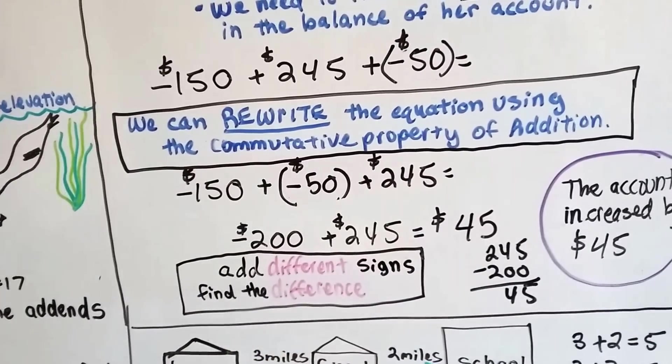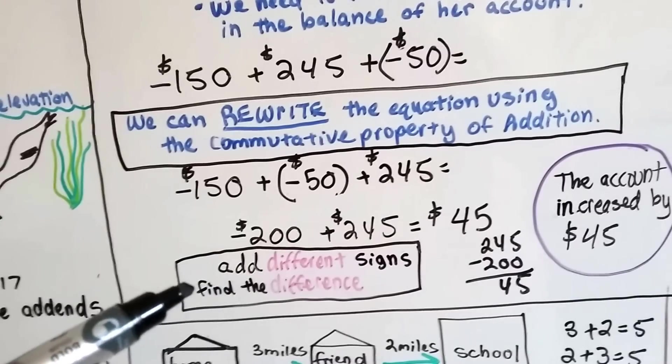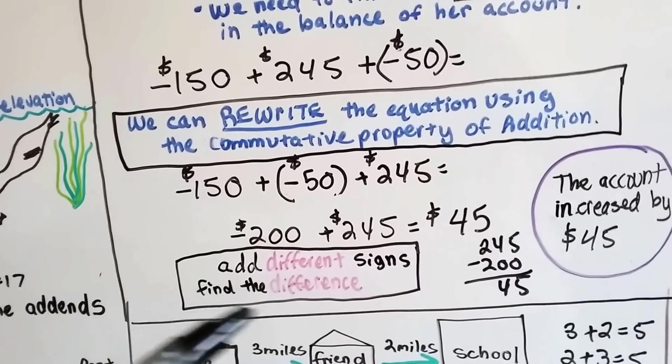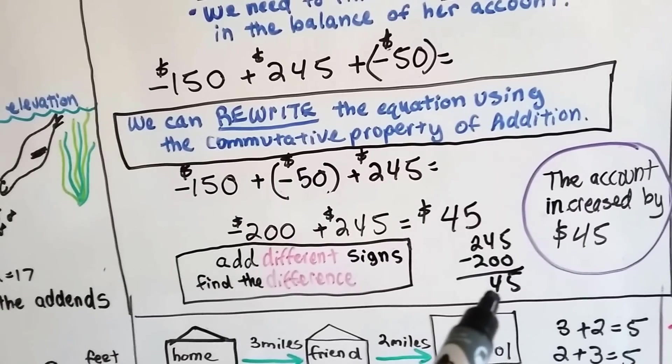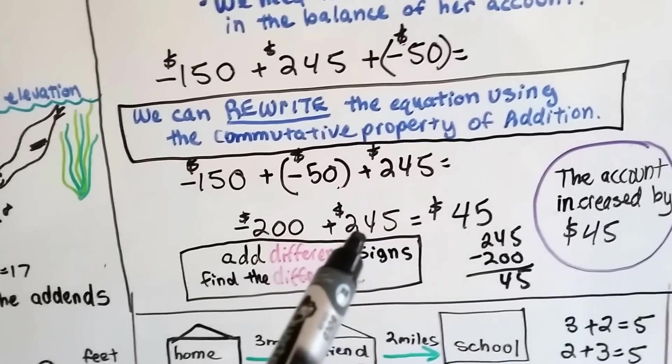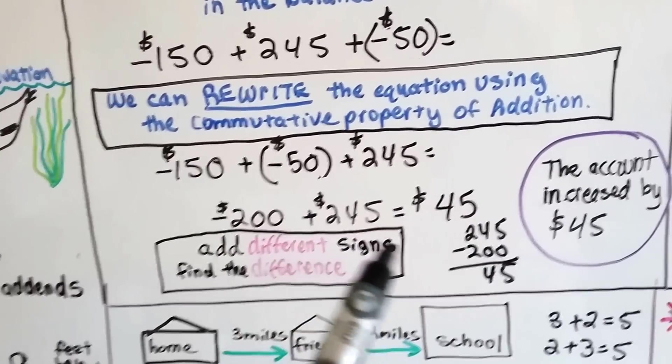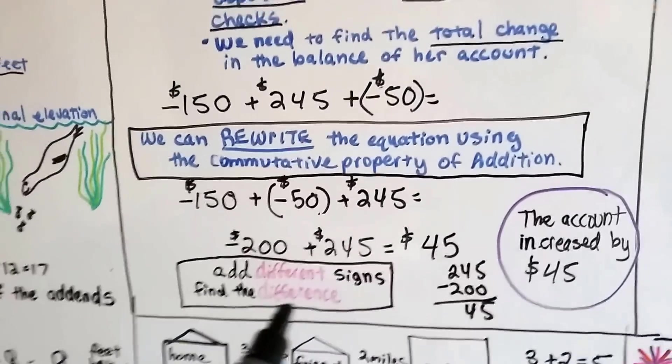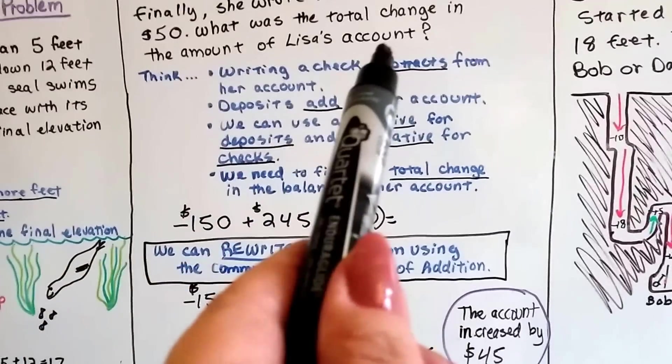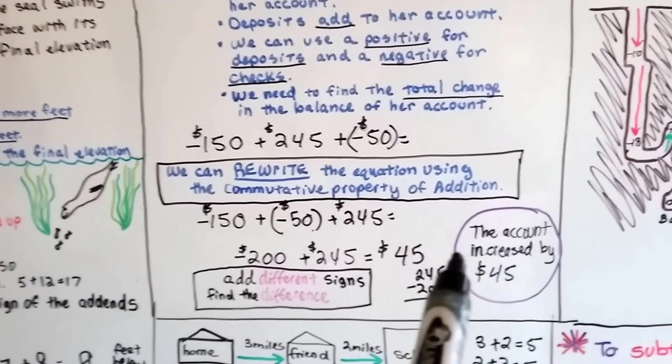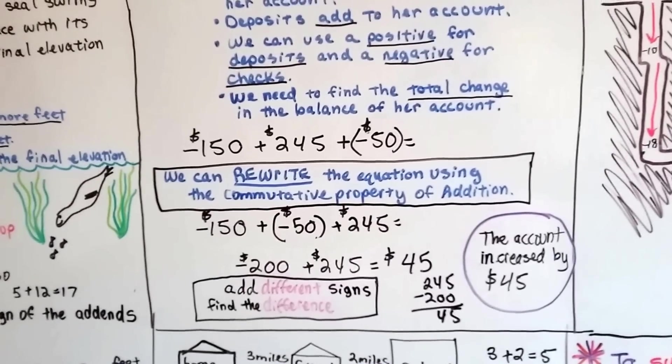Now, we need to add this 245, but it's a positive and that's a negative. When we add different signs, we find the difference. Different difference when adding. The difference between 200 and 245 is 45. 245 take away 200 is 45. We take the sign of the greater absolute value, the one farthest from zero, and 245 is farther away from zero, and it's a positive. So, our answer is positive. What did it want us to do? It wanted us to find what the total change in the amount of our account was. The total change in the amount of our account was $45. It increased. Because it's a positive, it increased by $45.